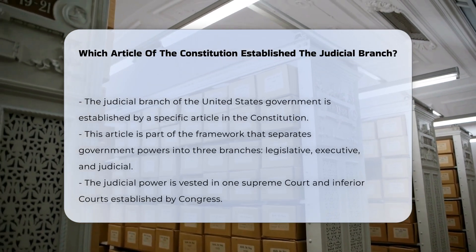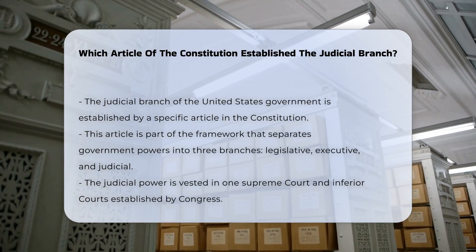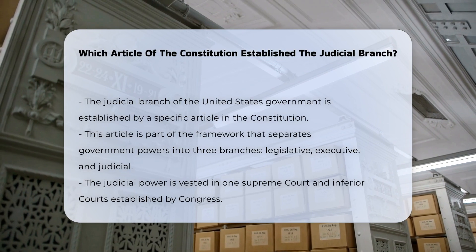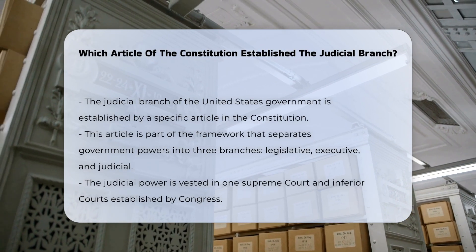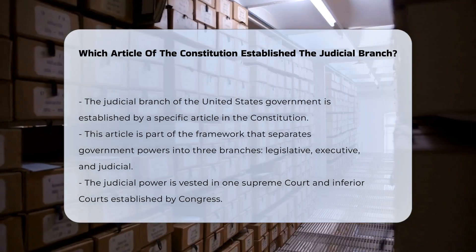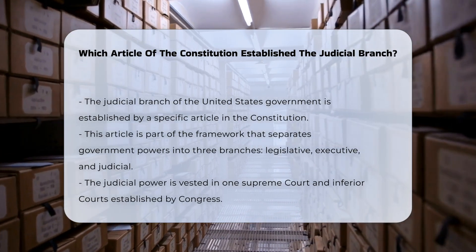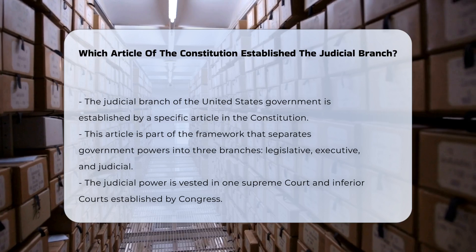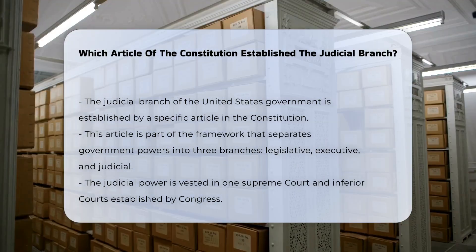The Judicial Branch of the United States government is established through a specific Article of the Constitution that outlines its structure, powers, and responsibilities. This article is part of the broader framework that separates the powers of the federal government into three branches.